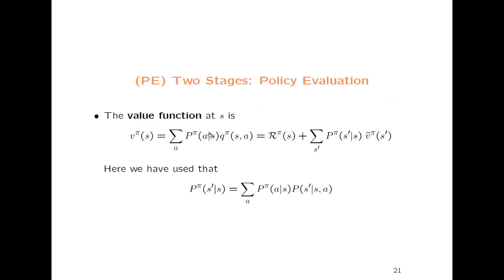We can also do one more integration and get the value function for the policy. We integrate over the probability of the action given s, which gives us the reward function for s under the policy, plus a third term that propagates the value of s' to the value at s. We use the definition that the probability of s' given s under policy π is the sum over all a of π(a|s) times the probability of s' given s and a. These formulas may look complicated but they can all be derived from the equations, and being explicit here gives you a good basis for understanding the later discussion.